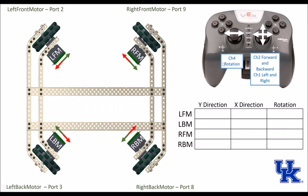Looking down the robot, we're going to refer to each of the motors by its position — this will be the left front motor. We're going to note when it's going clockwise with a green arrow and counterclockwise with a red arrow.